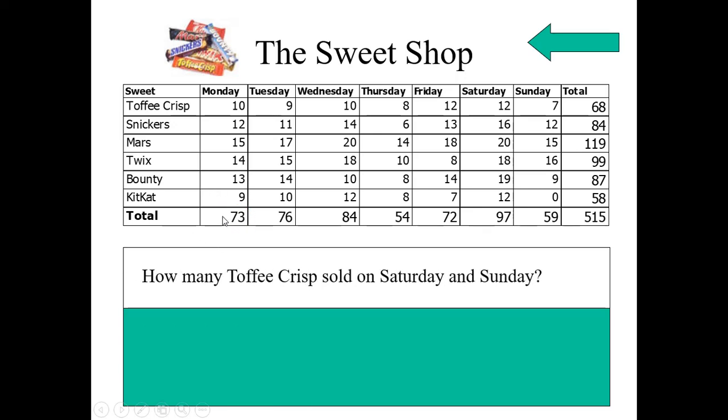How many Toffee crisps sold on Saturday and Sunday? Where is the item here? First one. Saturday, there are 12 given. On Sunday, how many are given? 7. Total how many? 12 plus 7. What is the answer? It is 19.